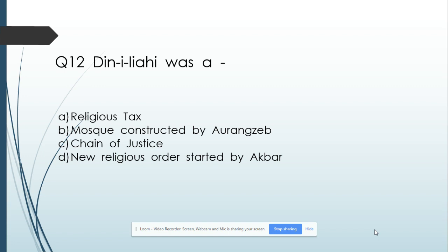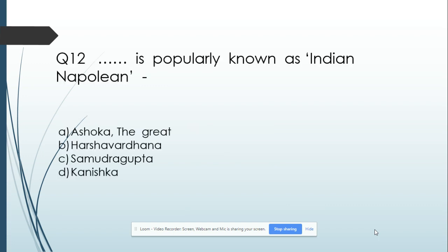Question number 11: The 'Din-i-Ilahi' was — Option A: A religious text. Option B: Music composed by Akbar. Option C: Chain of Justice. Option D: New religious order started by Akbar. And its answer is new religious order started by Akbar.